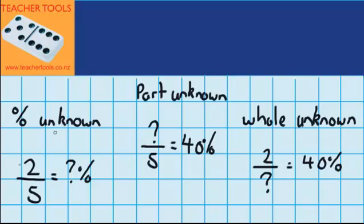The first type is called percentage unknown. So let's imagine you're doing a test and it's out of five questions, you get two correct. We want to work out what percentage that is.